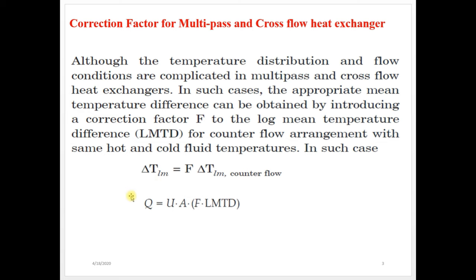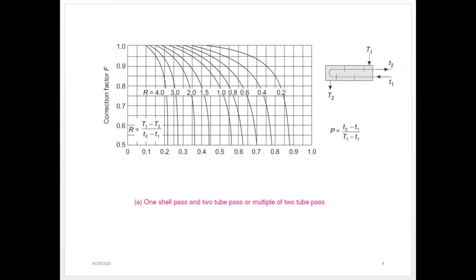Now we will see the different cases of this correction factor. The first case is 1 shell pass and 2 tube pass or multiple of 2 tube pass — this condition will be mentioned in the problem. Correction factor F can be calculated with the help of P and R values. The x-axis is P, y-axis is F, and R values are mentioned as curves on the graph.